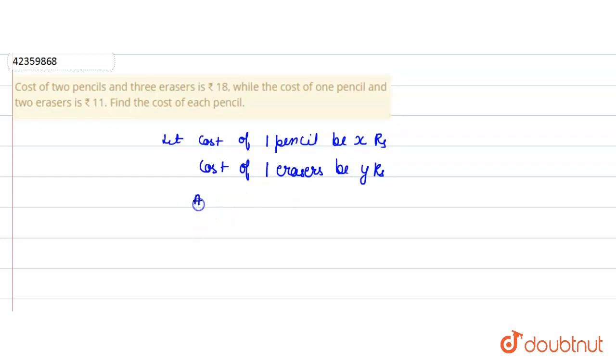According to the question, 1 pencil costs x rupees, so 2 pencils cost 2x. And 3 erasers cost 3y, which equals rupees 18.